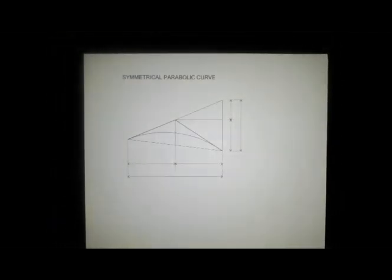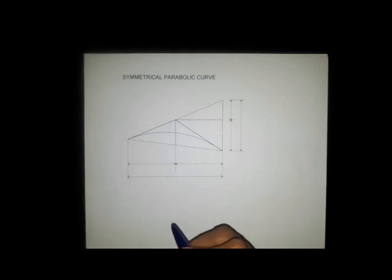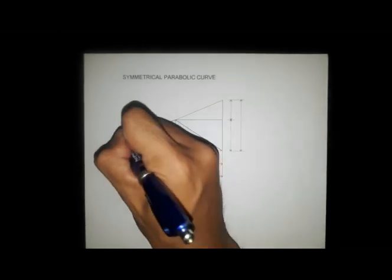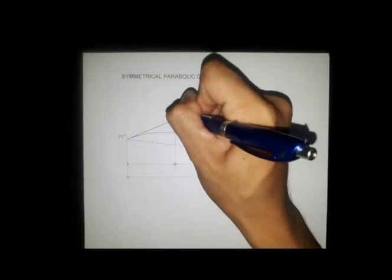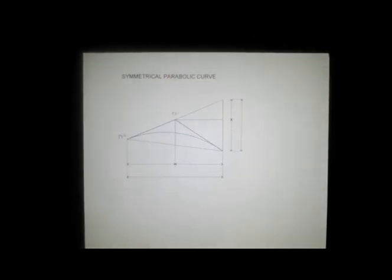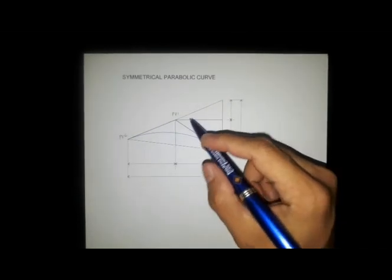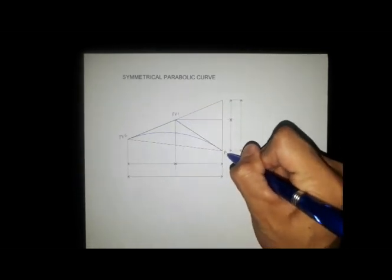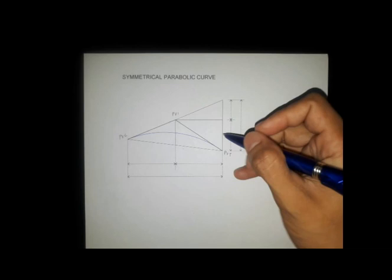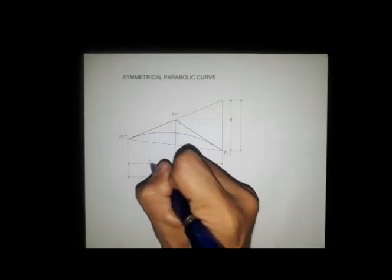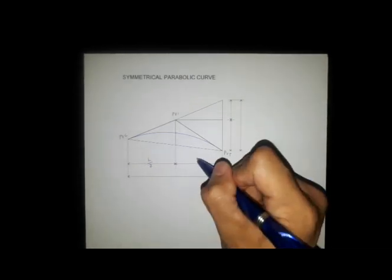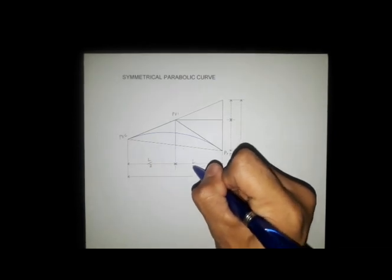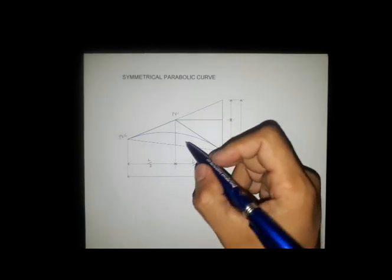A symmetrical parabolic curve is a vertical curve in which the distance from PVC to PVI is equal to the horizontal distance of PVI to PVT. So if this distance is L over 2, the distance on the right side of the curve is also L over 2.